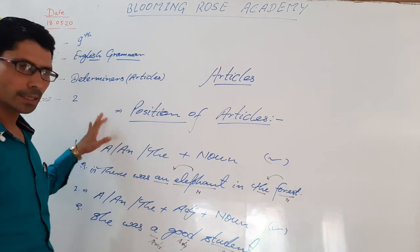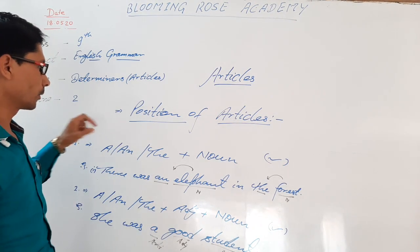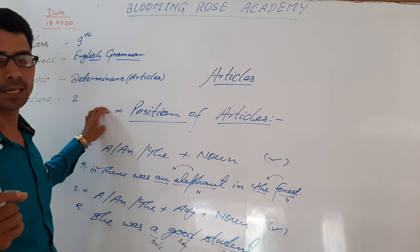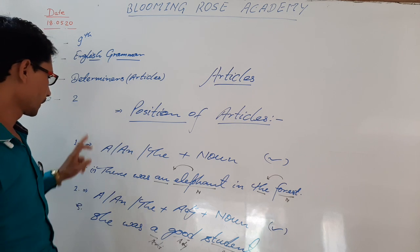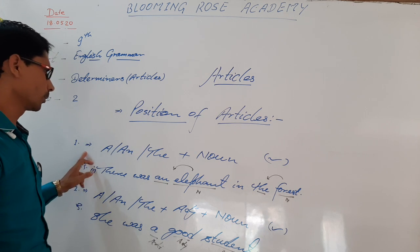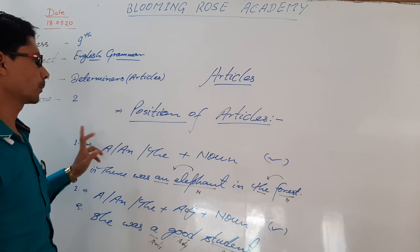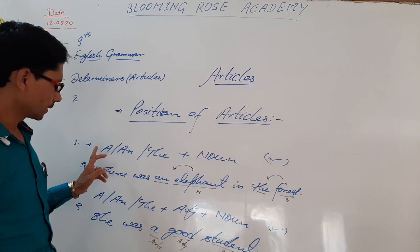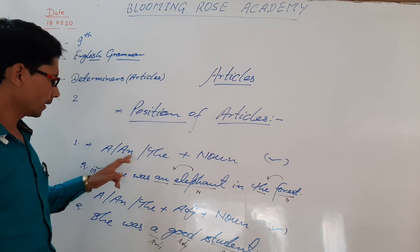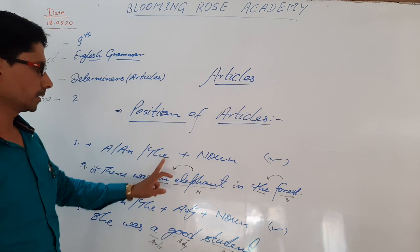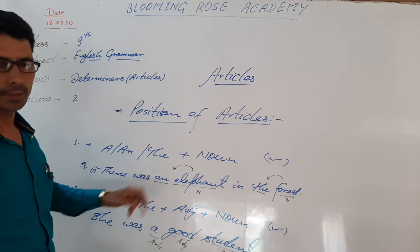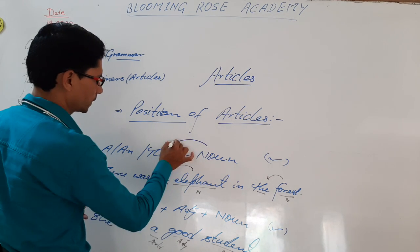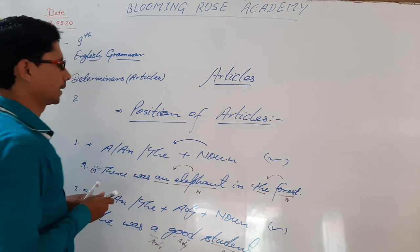How do we use articles and what is the position of articles? It means where we use articles in the sentence. The first rule: when we talk about position, article a, an, or the is always used just before the noun.